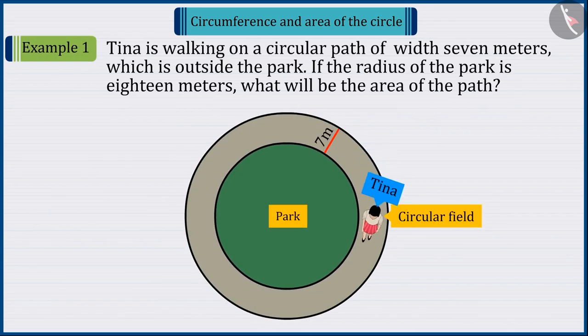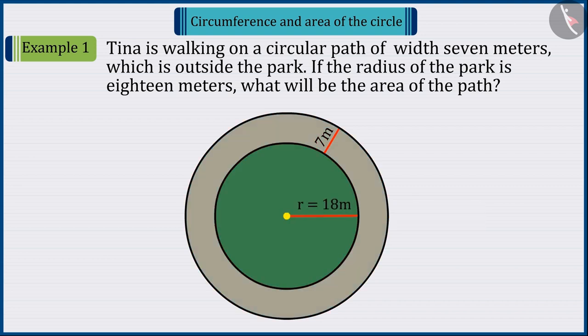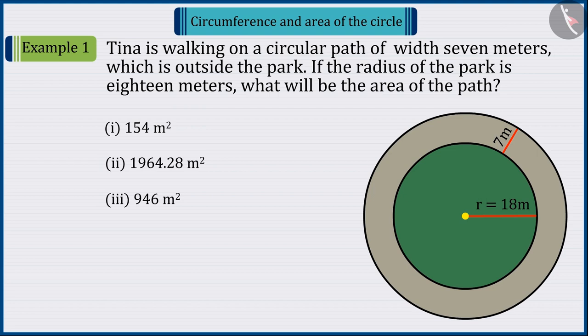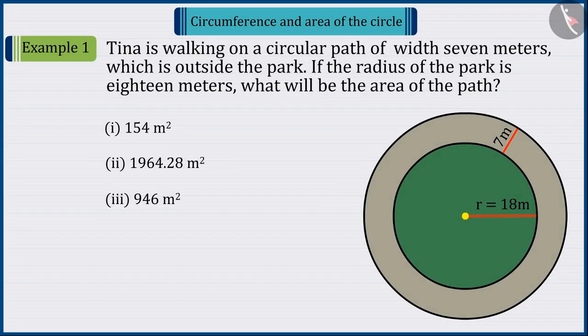Tina is walking on a circular path of 7 meters, which is outside this circular park. If the radius of the park is 18 meters, what will be the area of the path? Which of the following answer is correct? Pause the video to solve the question and then match your answer.